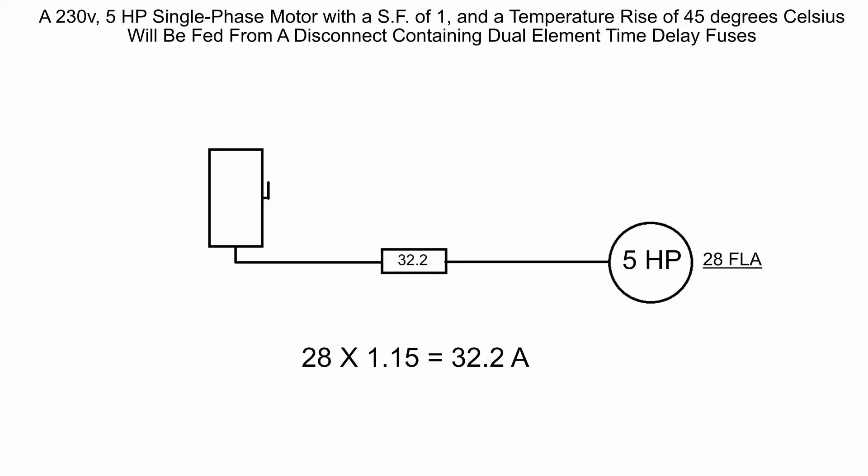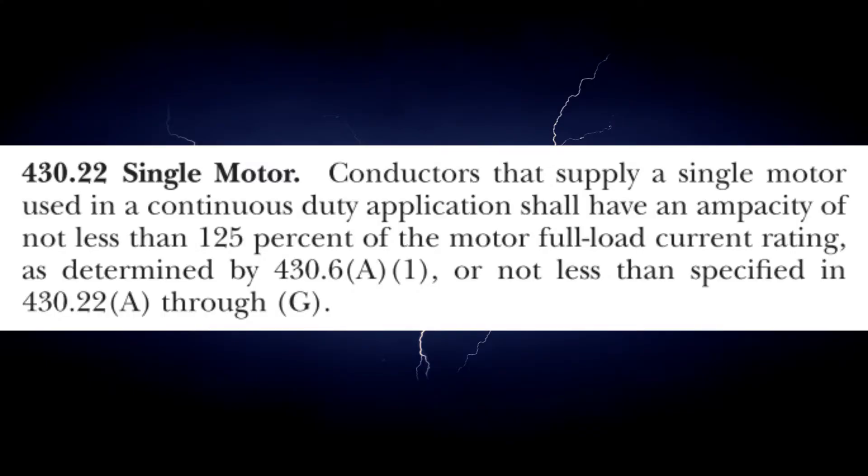To know how to do this we need to reference the code articles that are going to tell us that, and that's going to be 430.22 for a single motor. It says the conductors that supply a single motor used in a continuous duty application shall have an ampacity of not less than 125 percent of the motor full load current rating. Notice that it says continuous duty application, so what that means is it's a continuous duty application and that more or less applies to generally all motors.